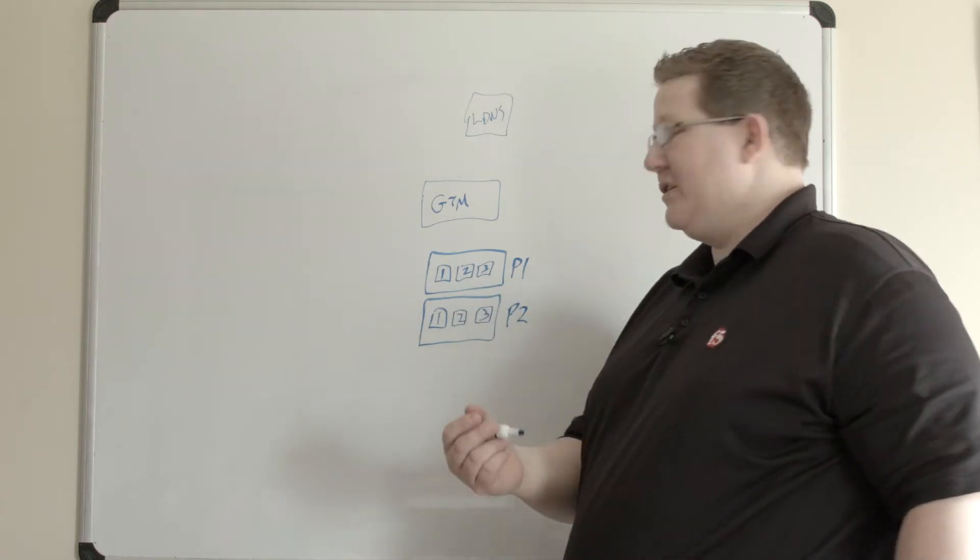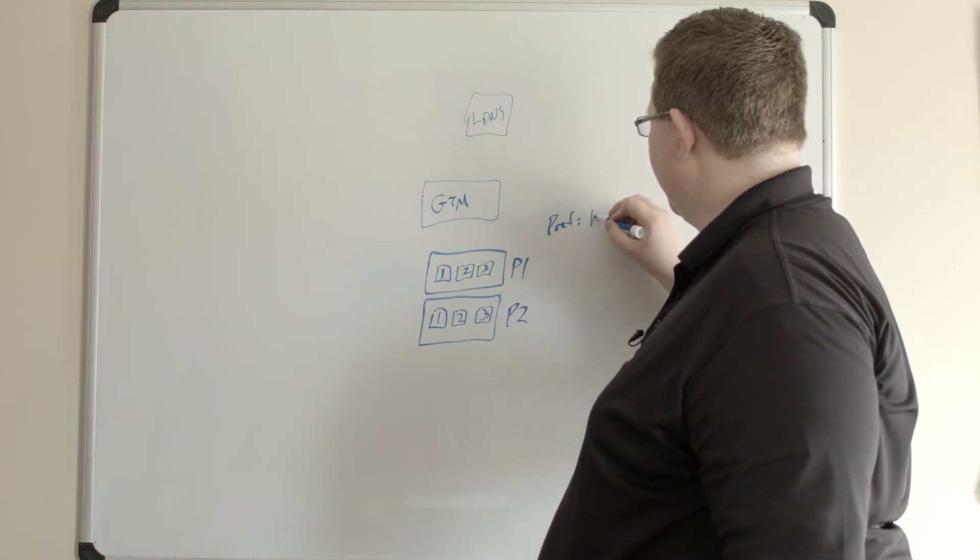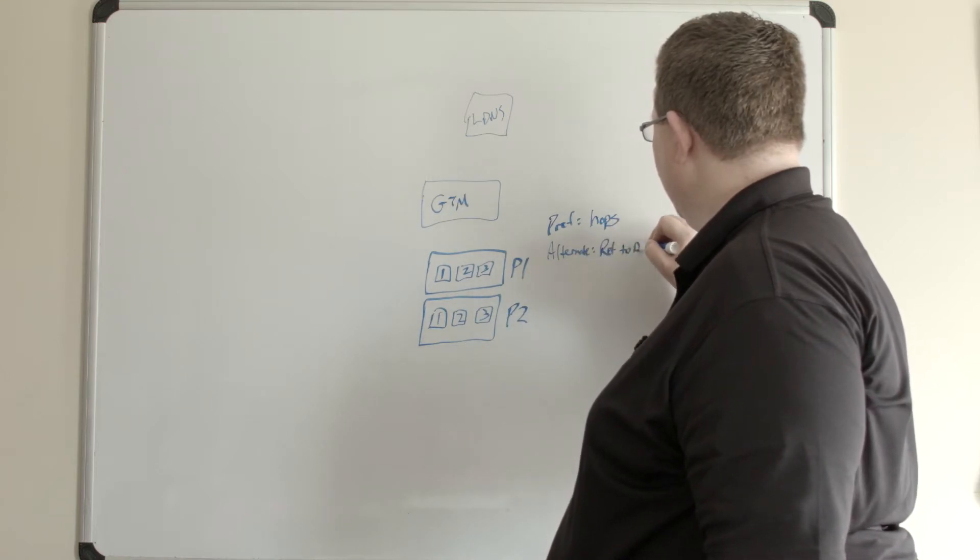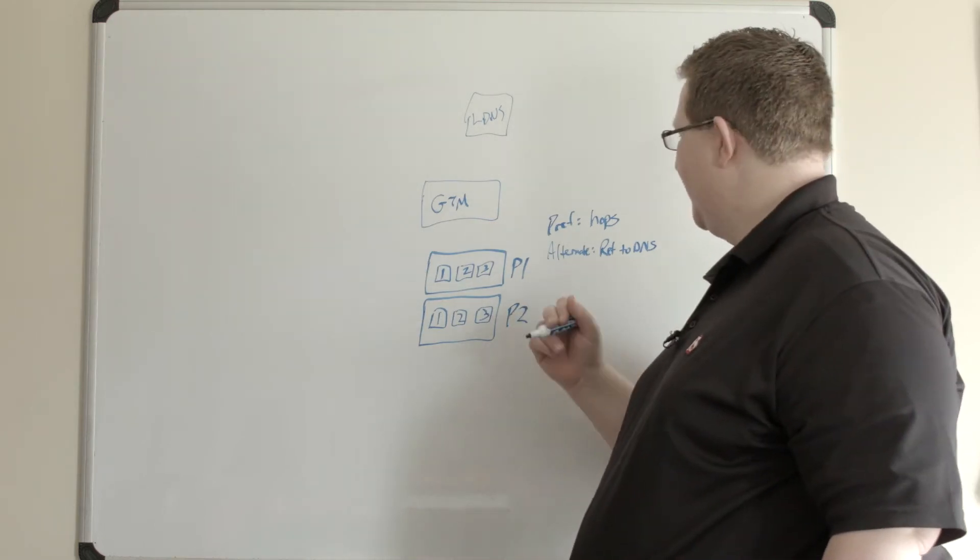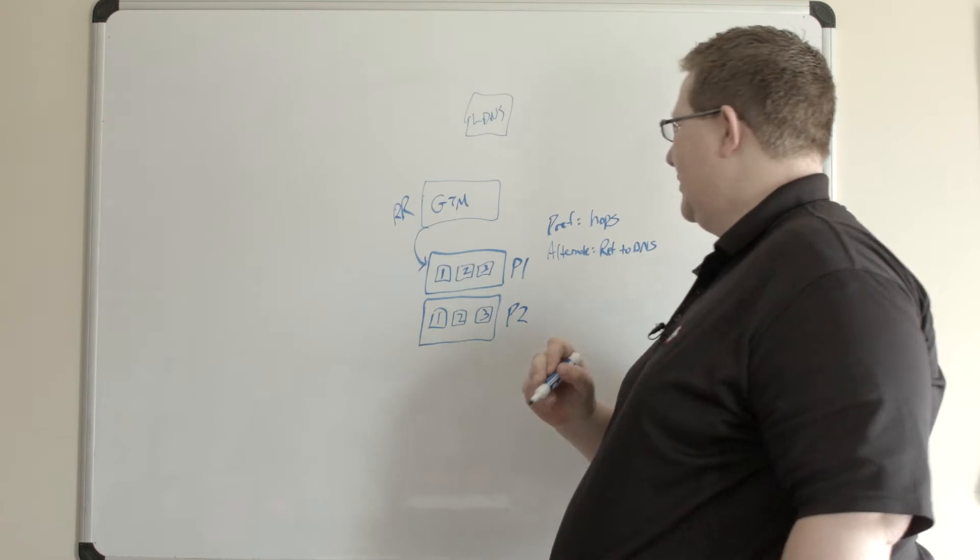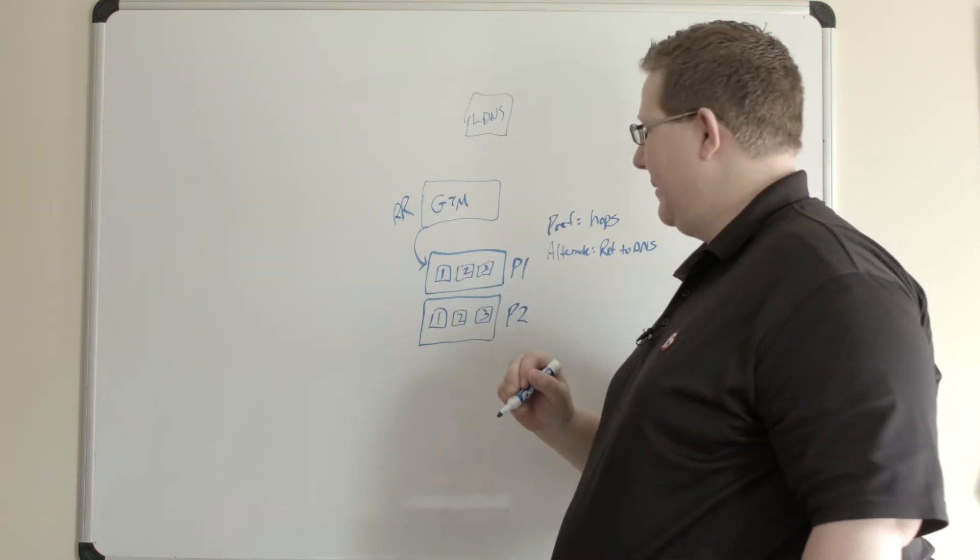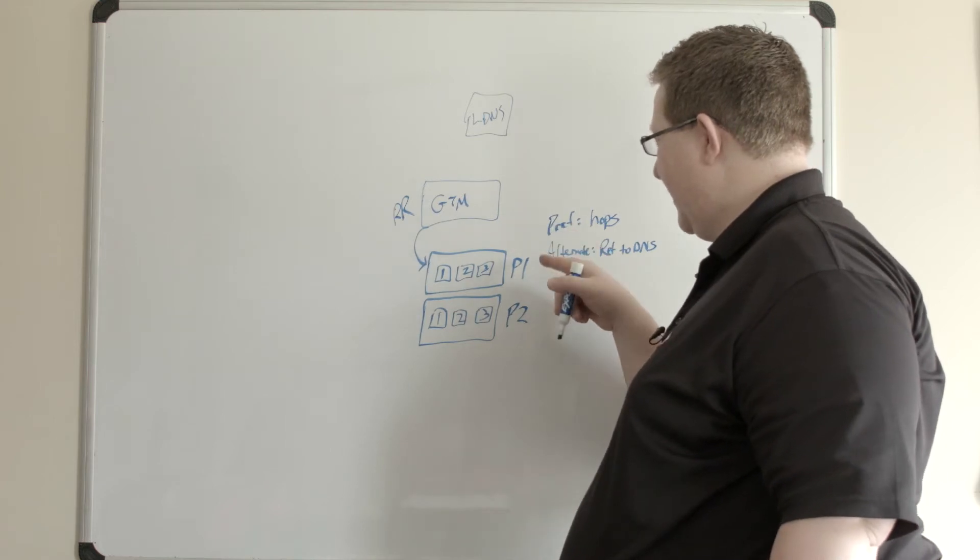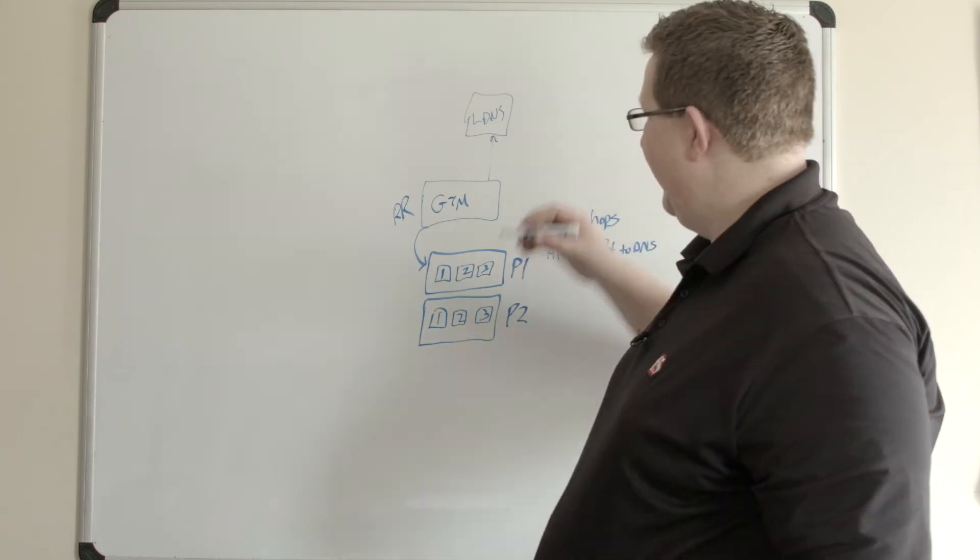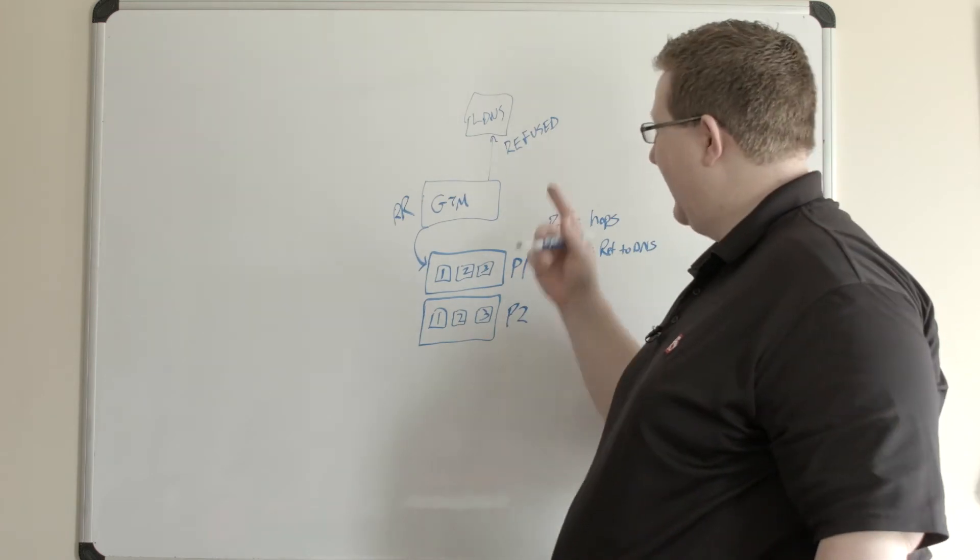How return to DNS works is if in my pool here I have a preferred method of hops, and then for my alternate method I'm going to do return to DNS. If I come into this pool, GTM selects this pool, maybe at the wide IP level I'm round robin. First request comes in here to pool one and pool one does not have any statistics for that LDNS server for any of these VIPs, so it's going to fall down from preferred to alternate. My alternate is return to DNS. What it's going to do is actively signal to that LDNS no dice via the refused status.